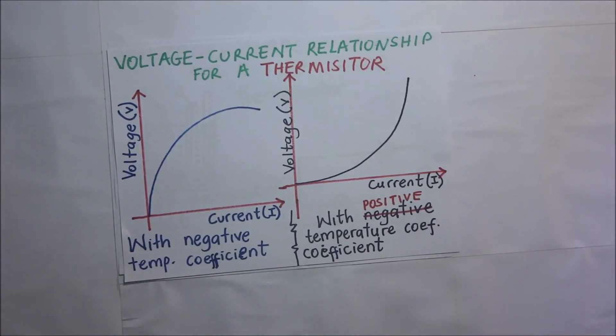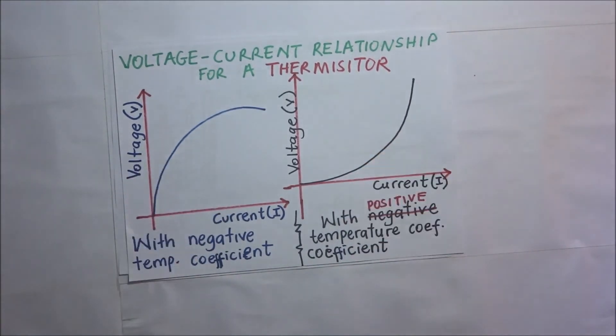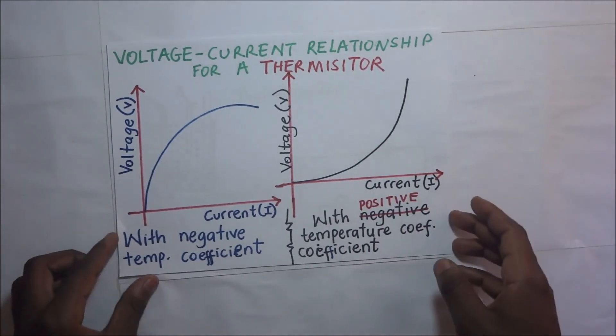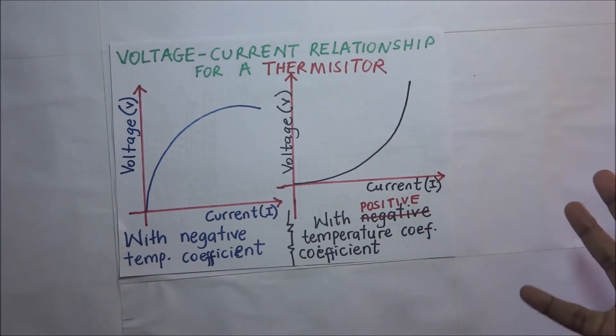The voltage-current characteristics are not linear as we can both see. This is an indicator that a thermistor is a non-ohmic conductor.